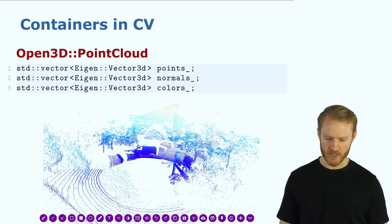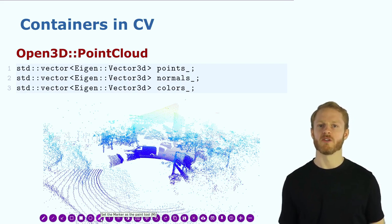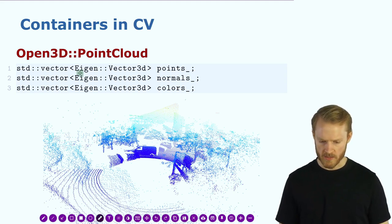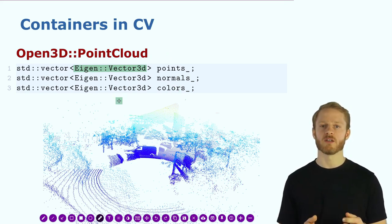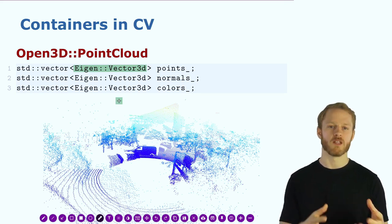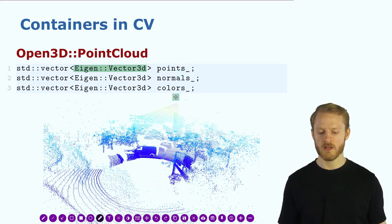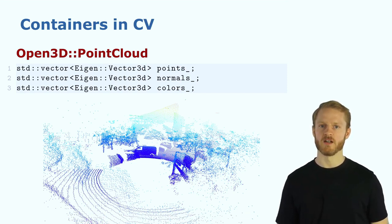Here's a real-world example showing how vectors are broadly used. This is a vector of `Eigen::Vector3d` — points, normals, and colors. You can see we are creating vectors of vectors or something similar. This is an implementation of Point Cloud storing points, colors, and normals in vectors. In C++, vectors are very powerful and broadly utilized.